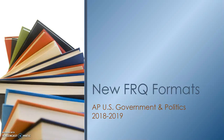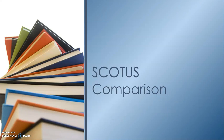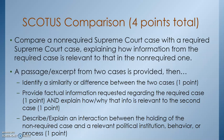So if you weren't in class, this is an explanation for your homework. This is the third type of the new FRQs — the Supreme Court case comparison. This one is always worth four points. You are going to compare a non-required Supreme Court case with a required Supreme Court case, and explain how the information from the required case is relevant to the non-required one.